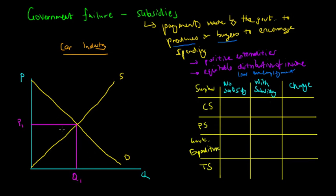At the moment the government is satisfied with the price, so they want to encourage more spending in the car industry so as to increase employment and create more jobs. That's the rationale behind why the government has subsidised the car industry. A subsidy is actually made to producers — they want to increase the production from Q1 to Q2.